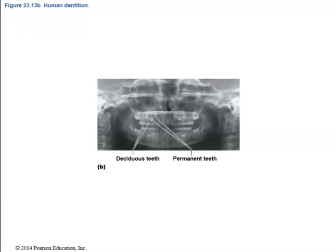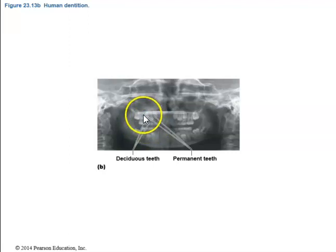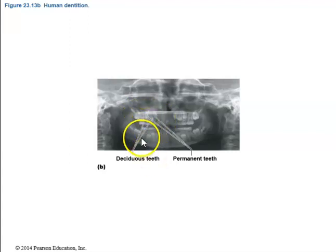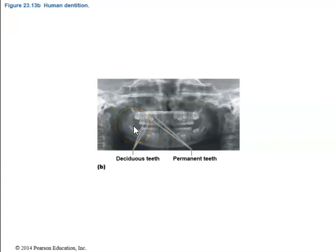An X-ray nicely shows the differences between deciduous and permanent teeth, with permanent teeth waiting behind the baby teeth — somewhat like a shark's rows of teeth — until the deciduous teeth fall out.